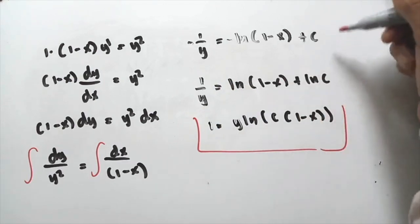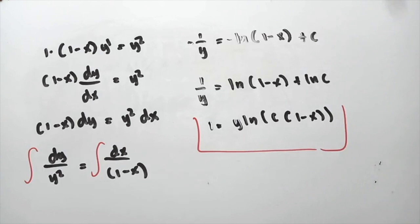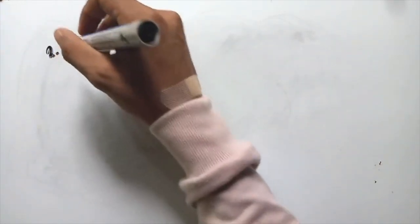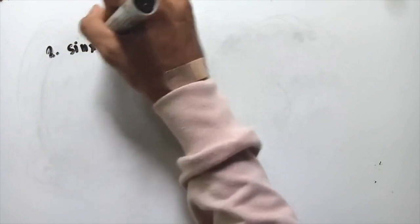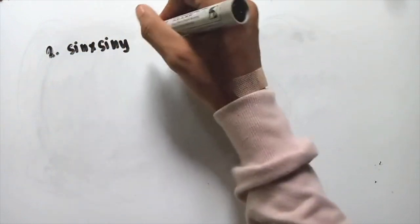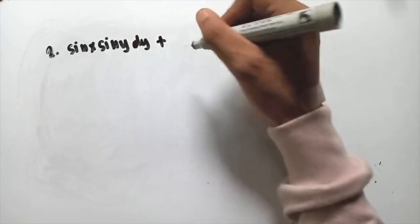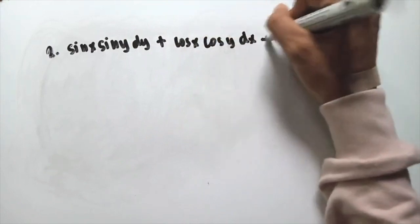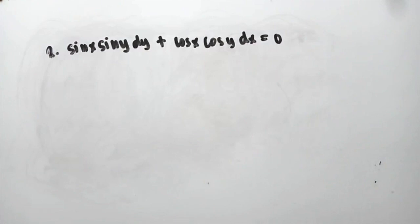Both forms are correct, but some professors prefer the simplified form. Now let's proceed to example number two: sin x · sin y dy + cos x · cos y dx = 0. This problem can also be separated.